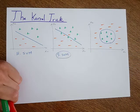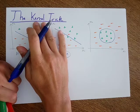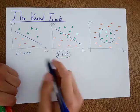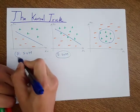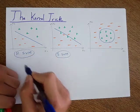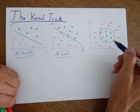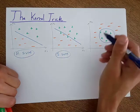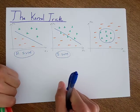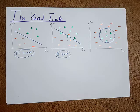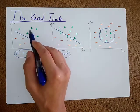So now the kernel trick is a method that would allow us to use the hard support vector machine to create boundaries of different types. It can be circular, it can be quadratic, it can be polynomial, it can be a funky shape. This is done by something called the kernel trick.